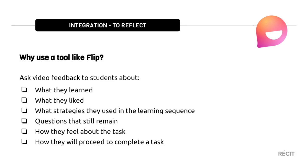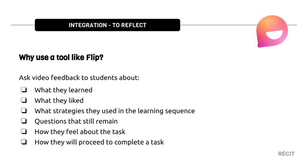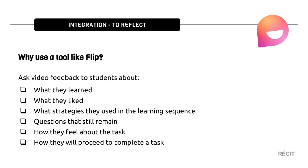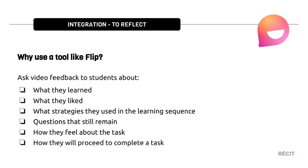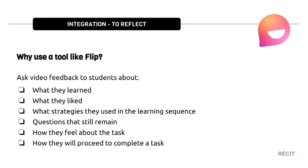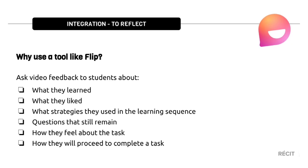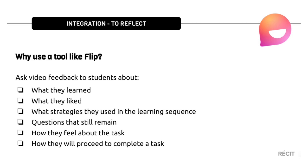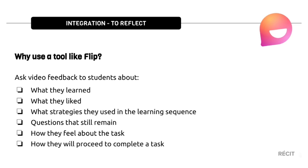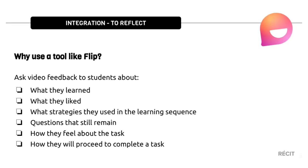In the integration phase, it's important for students to reflect. You can use a tool like Flipgrid so students can give you feedback about what they've learned, liked, what strategies they've used in the learning sequence, questions that still remain, how they feel about a task, or how they will proceed to complete a task. You can also observe them in interactions.